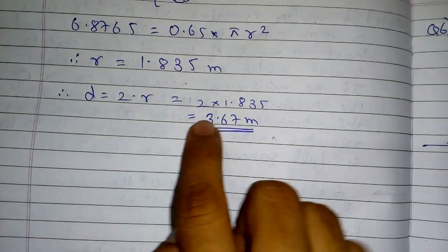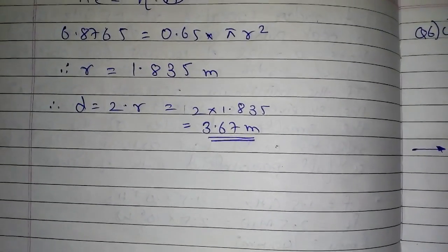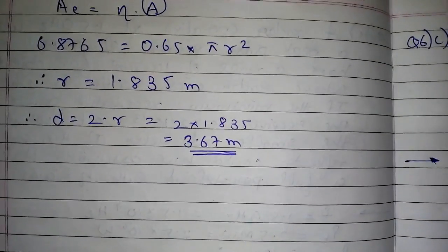And d is diameter which is nothing but 2r, so that gives me 3.67 meters. So this is the diameter of the antenna that we are asked to find. Thank you.